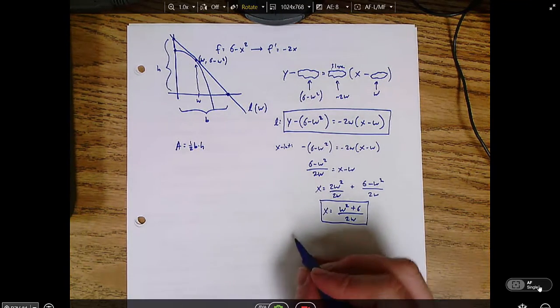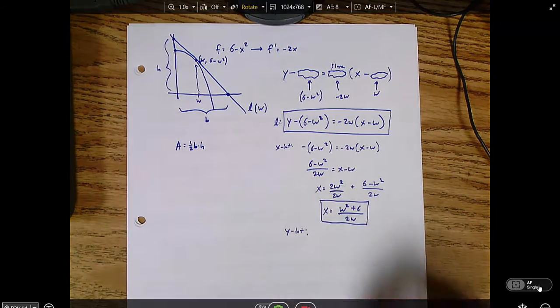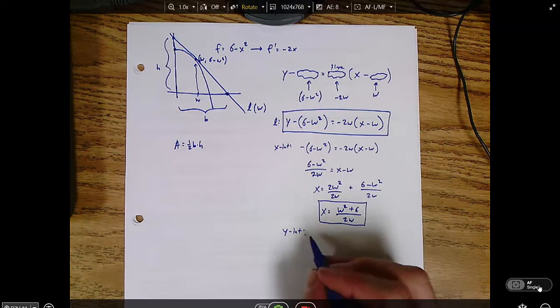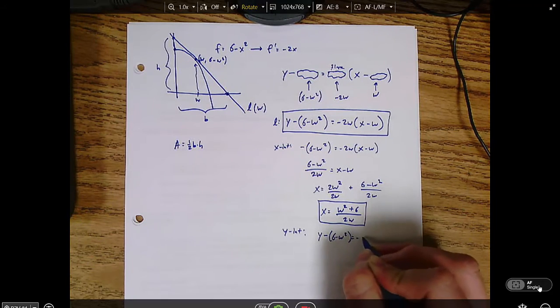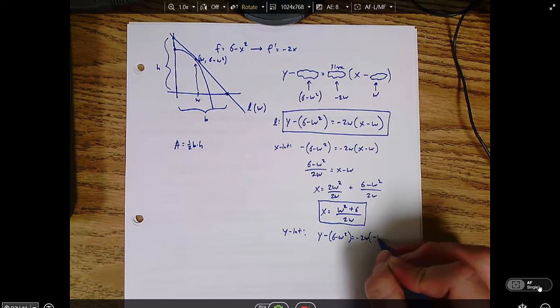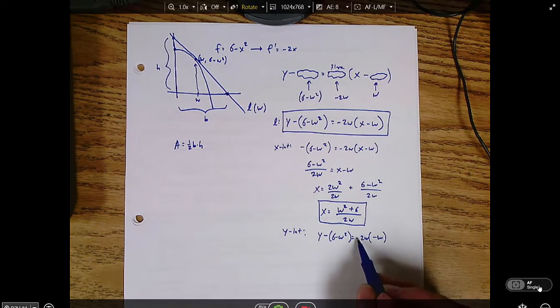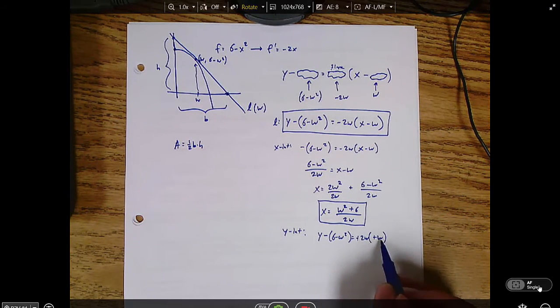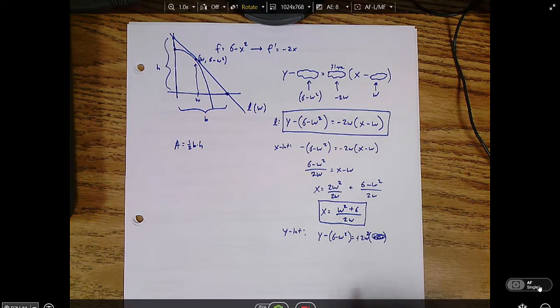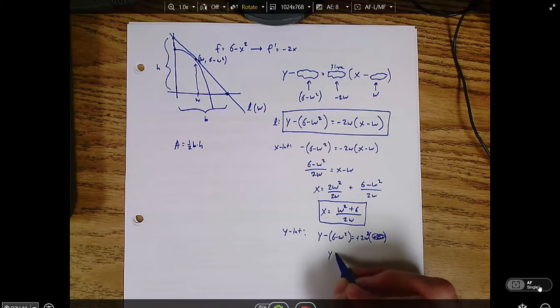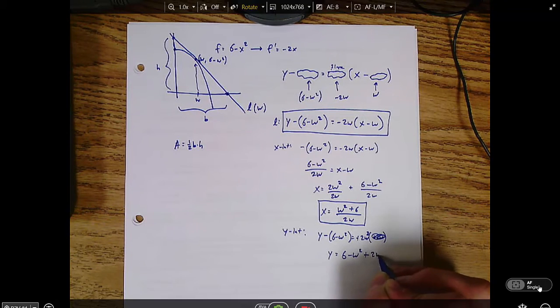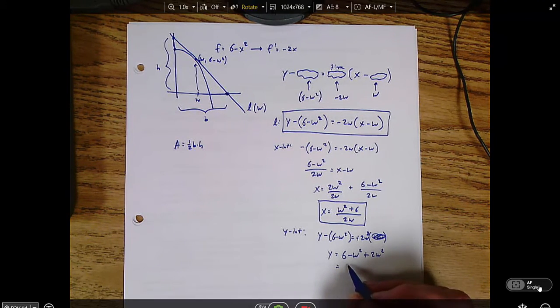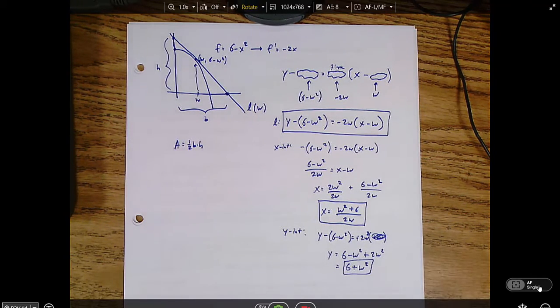So now let's go ahead and find the y-intercept. So the y-intercept is what happens when x is 0. So y minus 6 minus w squared equals negative 2w. x is 0, so that's just negative w. So this right-hand side, the negatives cancel, and 2w times w is the same thing as 2w squared. So now I'll just add this whole term. So I've got y equals 6 minus w squared plus 2w squared, which is the same thing as 6 plus w squared.